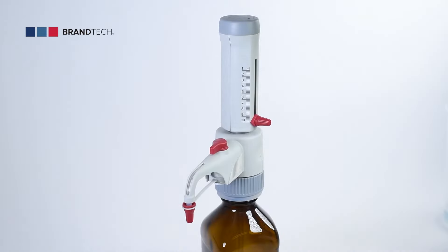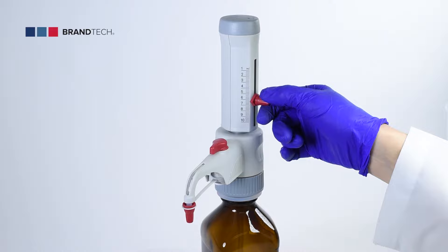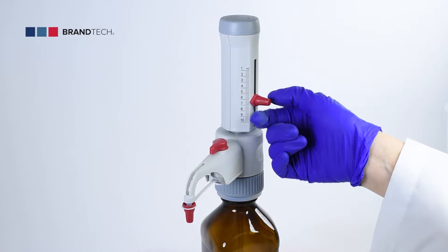To adjust the volume setting for the analog adjustable model, loosen the volume selector thumbscrew, slide the pointer to the desired volume, and re-tighten the thumbscrew.